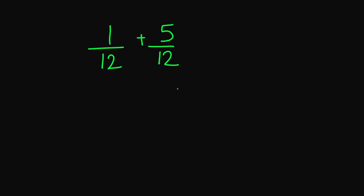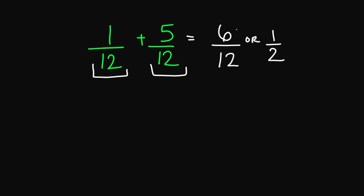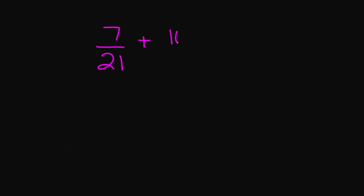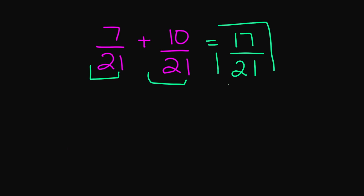What about 1 over 12 plus 5 over 12? My denominators are the same, so I'm going to add my numerators. 1 plus 5 is 6, that's going to be over 12. Or you simplify this into 1 over 2 — 6 divided by 6 is 1, and 12 divided by 6 gives you 2. What about 7 over 21 plus 10 over 21? I can just add my numerators. 7 plus 10 is 17, that's going to be over 21. I cannot simplify any further, so your final answer is 17 over 21.